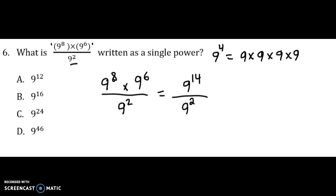So thinking about what this represents, if I've got 14 nines being multiplied together, then I'm dividing 2 of those nines out. What I'm really doing is saying, well, I had 14, I'm going to divide 2 of those out, so that's going to give me 12 left.